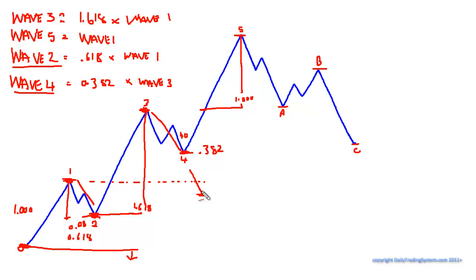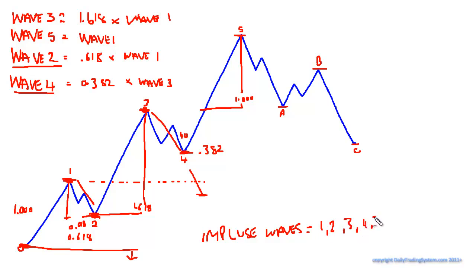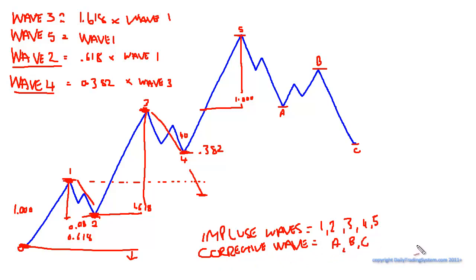I haven't actually discussed what impulse waves are yet. Impulse waves are wave one, wave two, wave three, wave four, and wave five. Then we have what's referred to as corrective waves — corrective waves are wave A, wave B, and wave C. So waves one through five are impulse waves, and A, B, and C are corrective waves.